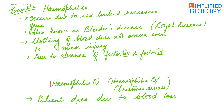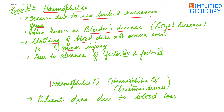An example of sex-linked inheritance is Haemophilia. Haemophilia occurs due to a sex-linked recessive gene. It is also referred to as bleeder's disease, as clotting of blood does not occur even to minor injury. It is also referred to as royal disease, as it was discovered from the royal family, that is Queen Elizabeth's family. Haemophilia is of two types: Haemophilia A and Haemophilia B. Haemophilia B is also known as Christmas disease. Haemophilia A occurs due to absence of factor VIII, while Haemophilia B occurs due to absence of factor IX, and the patient can even die due to blood loss.